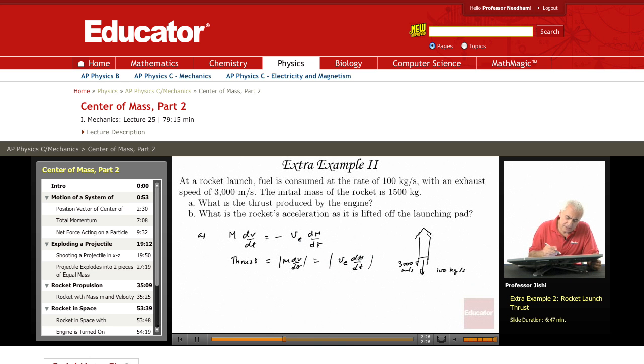This is the thrust. In this case, v is 3000 meters per second and dm over dt is, in fact, negative because the mass of the rocket is decreasing. But there's a minus sign here, so we end up with positive. Just for the sake of simplicity, take the absolute value. So v is 3000 and dm over dt is 100 kilograms per second, giving meters per second times kilograms per second, which is Newtons.